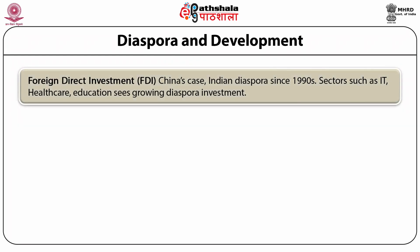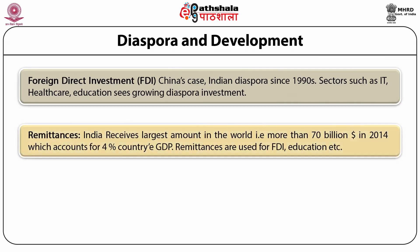Regarding foreign direct investment, in China more than 90% of the FDI comes from the Chinese diaspora. In India also, the proportion is rising over time, especially after the 1990s. Sectors such as information technology, healthcare, and education see growing interest from diasporic investment. In terms of remittance, India receives the largest amount of remittance in the world — about $70 billion in 2014 — which accounts for 4% of total GDP. Remittances are used for various purposes including education, healthcare, livelihood, and foreign direct investment.